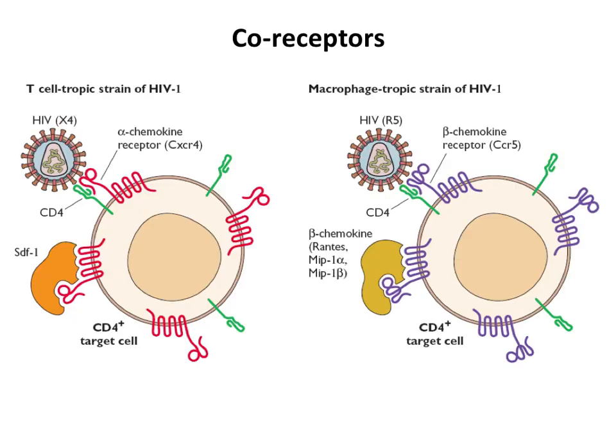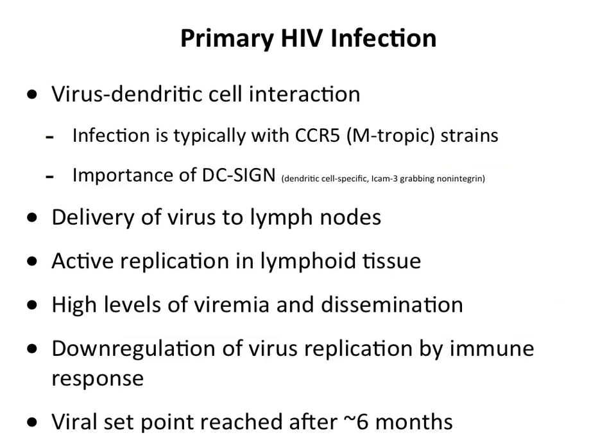The virus gets into cells by binding two receptors. CD4 is one receptor needed for attachment, which explains why the disease targets and kills CD4 T cells. It then needs a coreceptor — a chemokine receptor, either CXCR4 or CCR5. This determines the tropism of HIV strains that emerge. T-cell tropic strains prefer CXCR4 as a coreceptor; macrophage-tropic strains prefer CCR5. These change in an individual over the course of infection.